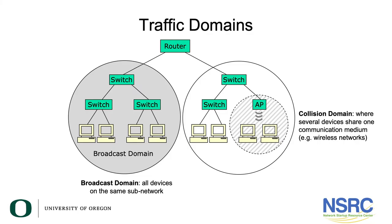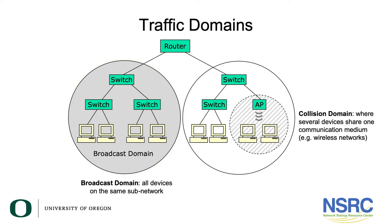Looking at how a network is built up, you'll see it is divided into areas called domains. A collection of switches connected together is called a broadcast domain — if any device sends a broadcast, the switches are forced to retransmit it to every device on every port. Routers, however, don't forward broadcasts: the broadcast arrives at the router and is processed if relevant, but it won't be forwarded onward. So routers divide your network into broadcast domains.